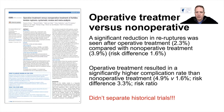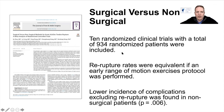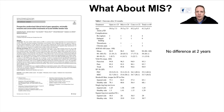When talking about operative versus non-operative treatment, a BMJ meta-analysis found a significant reduction in re-ruptures after operative treatment, but the problem is they didn't separate out the historical trials. A subsequent analysis of ten randomized clinical trials with 934 randomized patients found that re-rupture rates were equivalent if an early range-of-motion exercise protocol was performed, and a lower incidence of complications excluding re-rupture was found in non-surgical patients. So patients who underwent functional rehab did better with regard to complications, with no difference in functional outcomes.